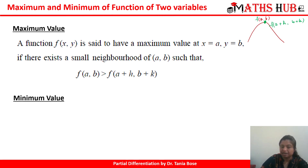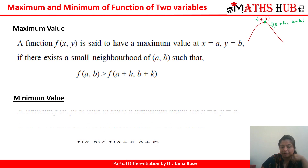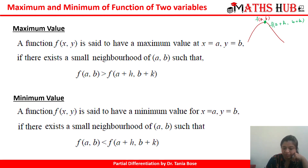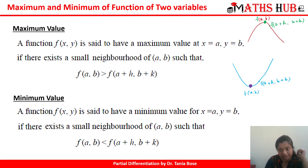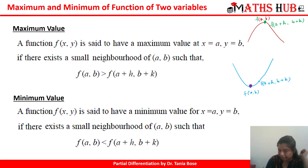Likewise, how do we calculate the minimum of a function of two variables? Minimum means that if we take a point (a, b) as the lowest point, and the neighboring point (a+h, b+k), then according to the shape of the curve the value of the function at (a, b) will be less than the value at (a+h, b+k). So whenever the function has a lesser value compared to neighboring points, we say the function attains a minimum value at x equal to a and y equal to b.